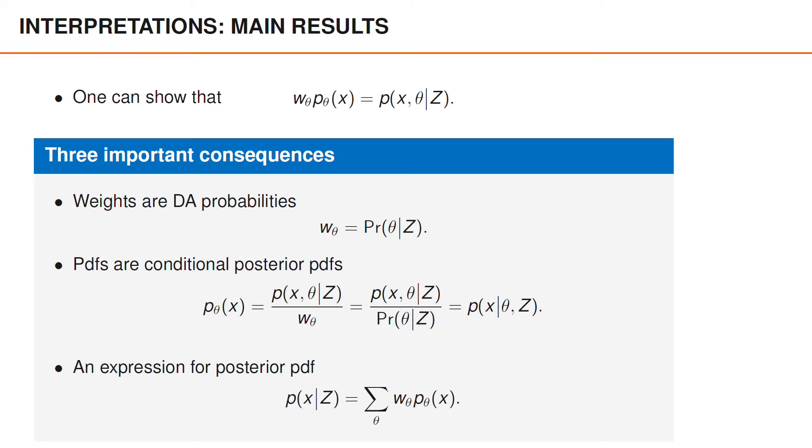Finally, as a sanity check, we can use the above result to verify our expression for the posterior density by marginalizing both sides with respect to θ. The right-hand side then becomes the posterior of x given z, whereas the left-hand side becomes the summation over θ of Wθ times Pθ. As you can see, it all fits together very nicely, and to make sense of the equations that we are about to present, it is very useful to keep these interpretations in mind.